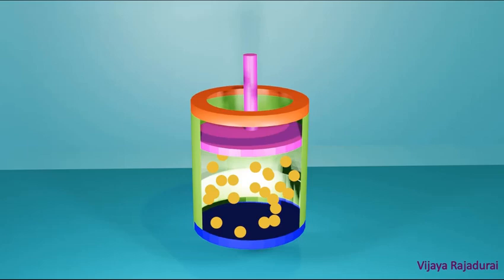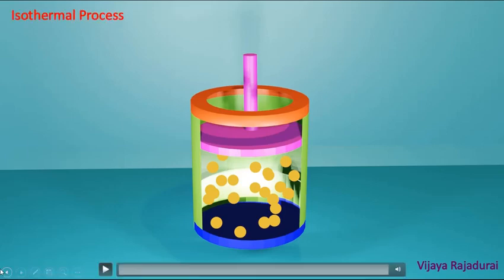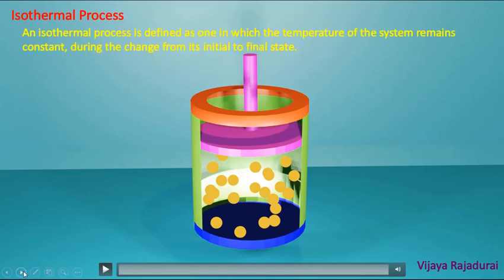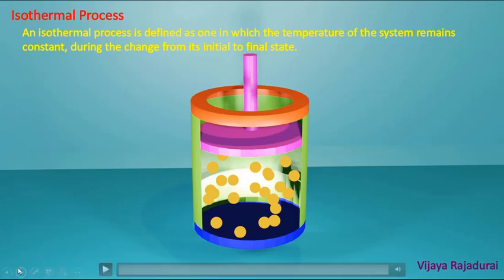Hello viewers. In this video we will discuss an isothermal process. First we see the definition: an isothermal process is defined as one in which the temperature of the system remains constant during the change from its initial state to final state.